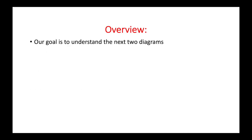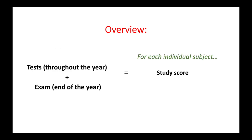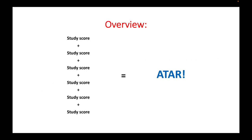Our goal for this video is to understand the next two diagrams. This is the first diagram. For each individual subject a student studies, they will receive a study score. What contributes to that study score? Students will have tests throughout the year and an exam at the end of the year. All those study scores — one per subject — are added up, and that is essentially the student's ATAR. Pretty simple.